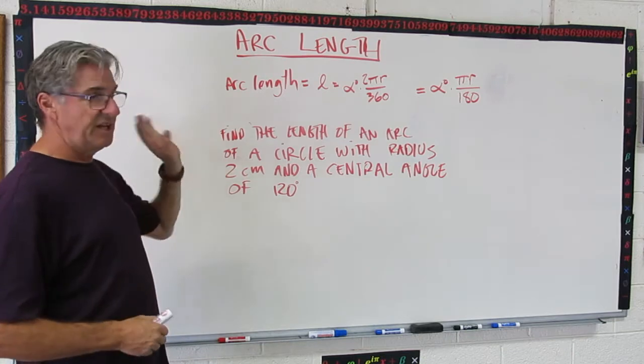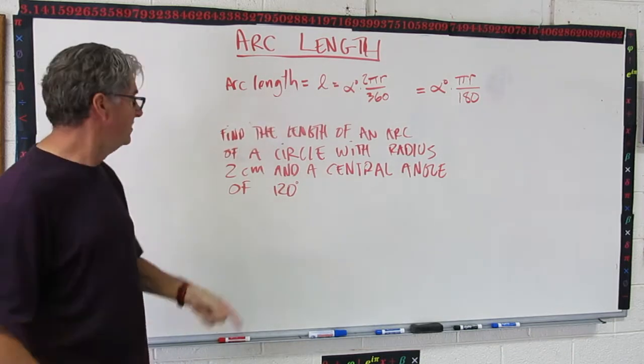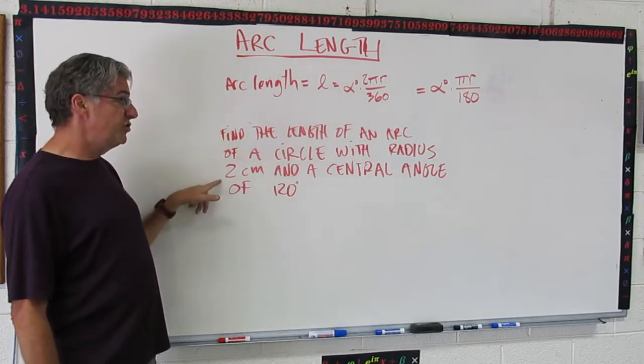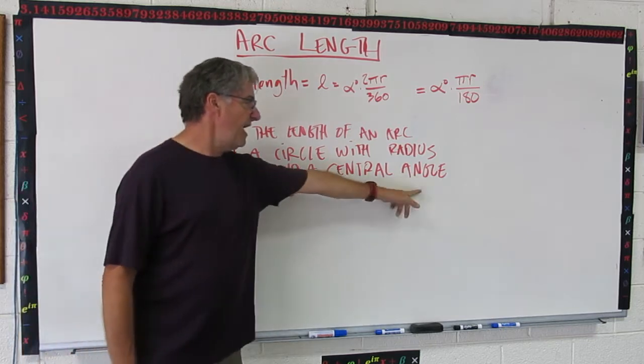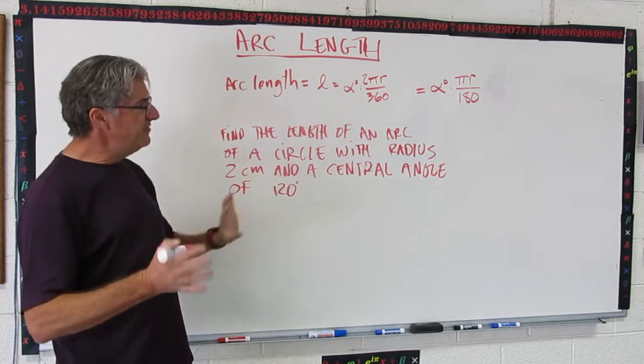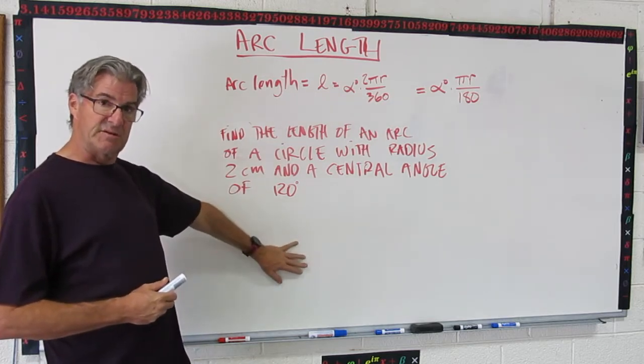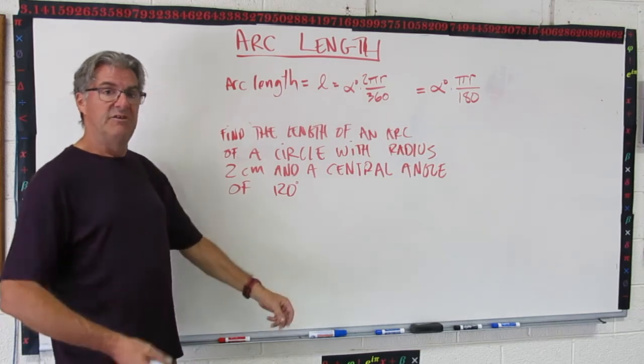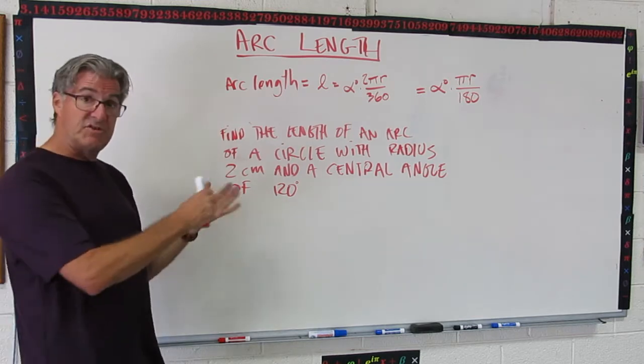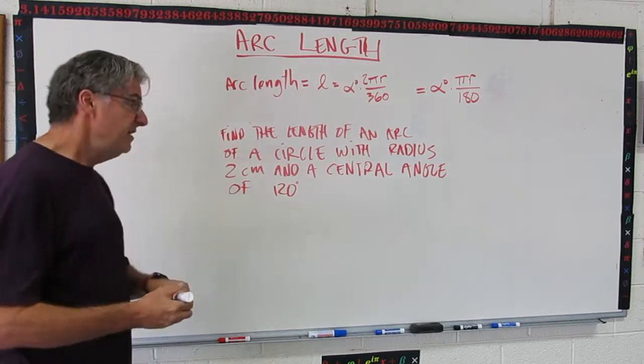So let's do a practical problem. This is a real straightforward one that just allows you to plug into the formula. I'm going to draw a diagram for you too, because I think that's helpful. So here's the problem. Find the length of an arc of a circle with radius 2 centimeters and a central angle of 120. So once you have this mastered, you probably don't need to draw a diagram, but I want to do that with this problem just to be on the thorough side. So pause the video right now and see if you can draw a diagram of this problem kind of similar to those diagrams we drew in the last screen.